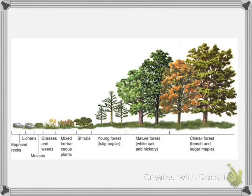This picture is showing us some primary succession where we start with exposed rock, we then get lichen which allows for mosses to grow, we get grass and weeds usually from spreading of seeds from wind, and then all the way up to a climax forest which will include your hardwoods, your more mature trees.